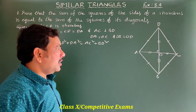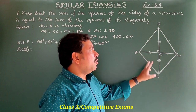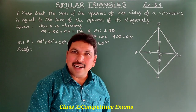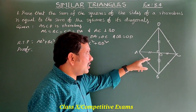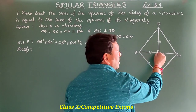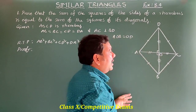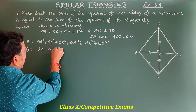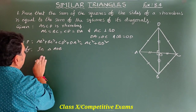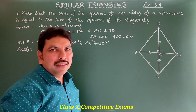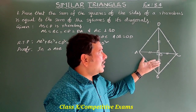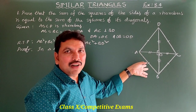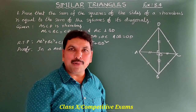Proof. First, take triangle AOB. Triangle AOB is a right-angle triangle. Why? Because the diagonals bisect each other at right angles. In triangle AOB, by Pythagoras theorem, the sum of the squares of any two sides of a right-angle triangle is equal to the square of the hypotenuse.